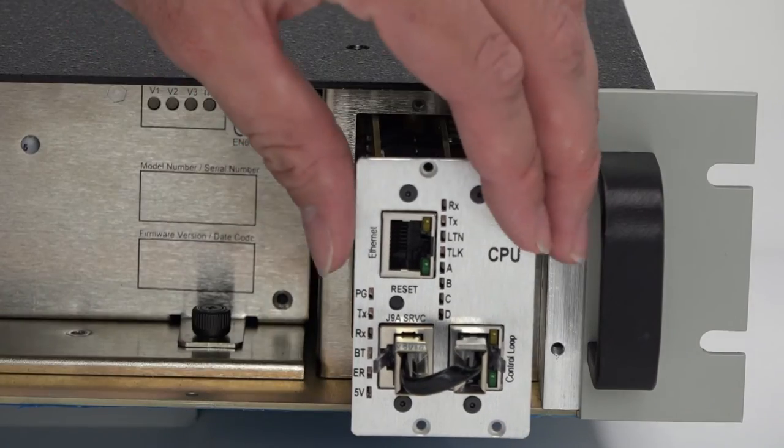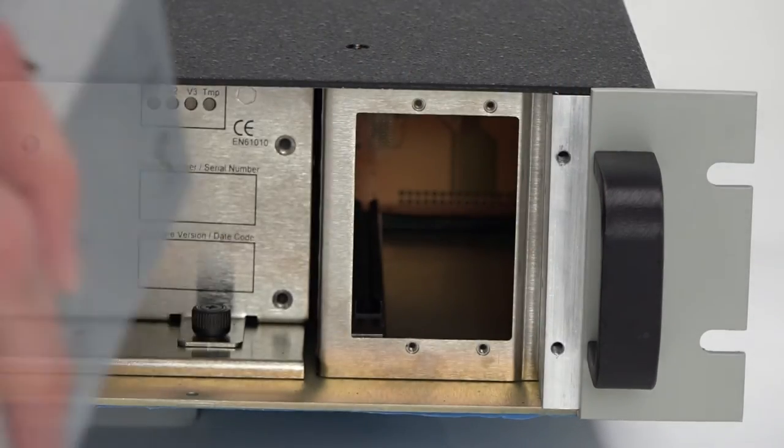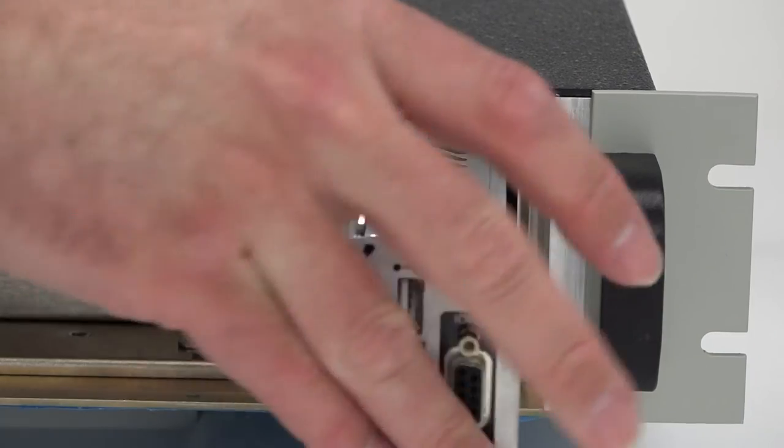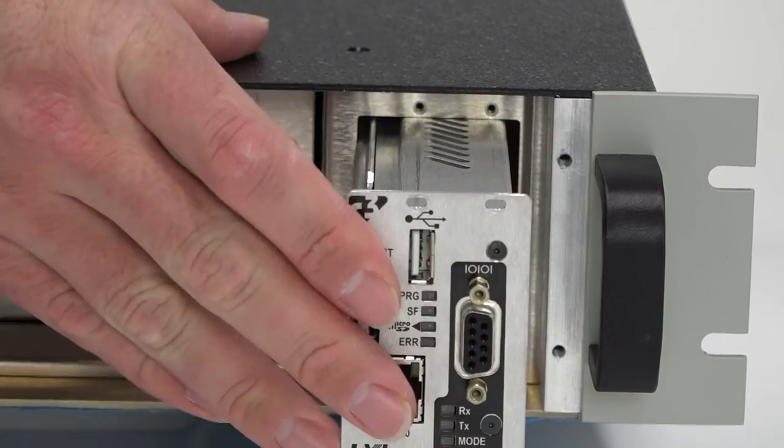Finally, replace the CPU module by removing the four securing screws and pulling it from the system. Carefully insert the new module and secure in place.